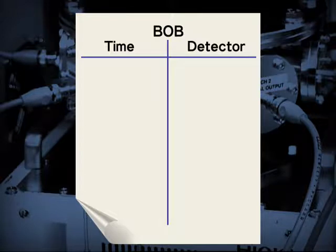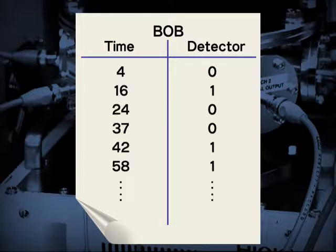Bob makes a record of which photon detector, zero or one, received the photon and at what time.